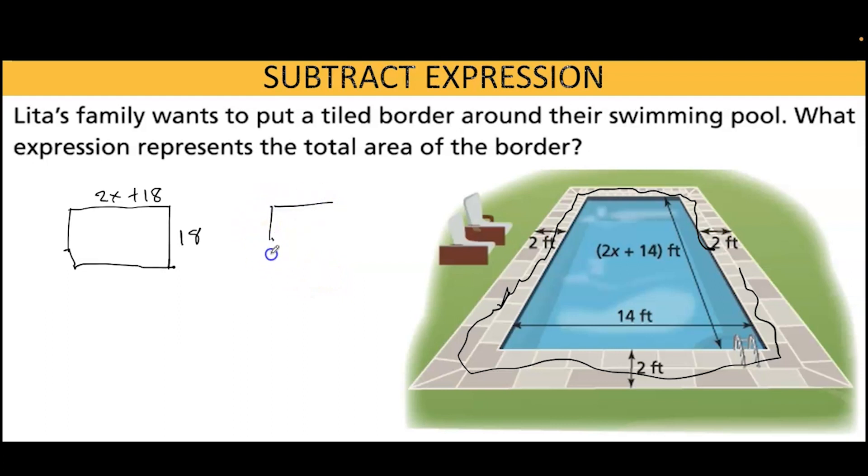Then we have a smaller rectangle. The width would be 14 and the length would be 2x plus 14. So in order to find the area of just the border, we subtract the area of the small rectangle from the area of the large rectangle.